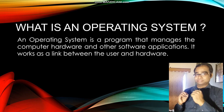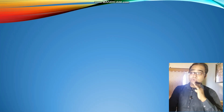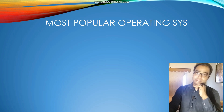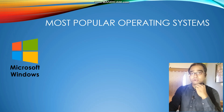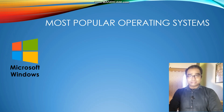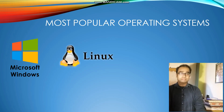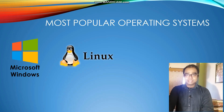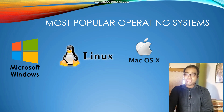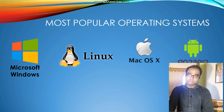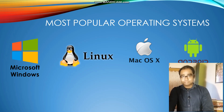Next, here are the most popular operating systems. First is Microsoft Windows — I hope you all know about Microsoft Windows, it is used in almost all computers worldwide. Next is Linux, also an operating system used worldwide. Next is Mac OS, basically used in Apple's laptops and desktops. And next is Android — Android is used in mobile phones and is a very popular operating system.